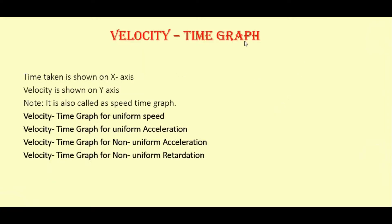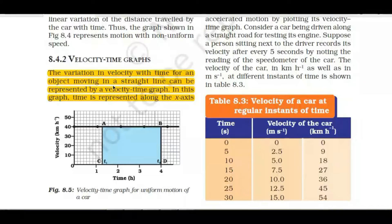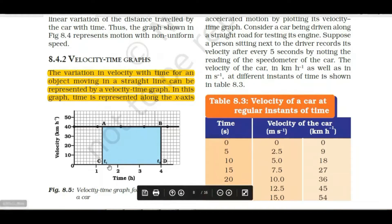The next graph is the velocity-time graph. Previously we discussed the distance-time graph; now this is the velocity-time graph. Here, time is taken on the x-axis and velocity is shown on the y-axis. It is also known as a speed-time graph. We will see velocity-time graphs for uniform speed, uniform acceleration, non-uniform acceleration, and non-uniform retardation.